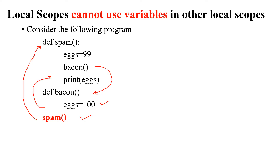Back in spam, I'm printing the value of x — is it 99 or 100? The answer is 99. The moment execution returns from the bacon function, its value of 100 is destroyed and forgotten. Back in spam's local scope, the value of x is 99, so printing x gives 99 as the output. This demonstrates that local scopes cannot use variables in other local scopes.